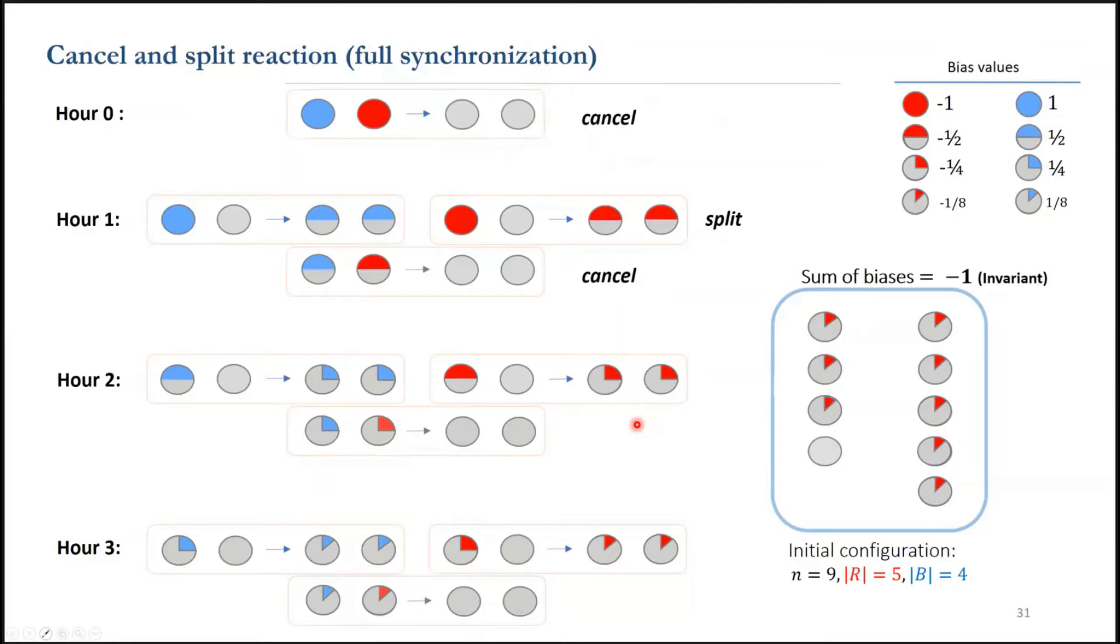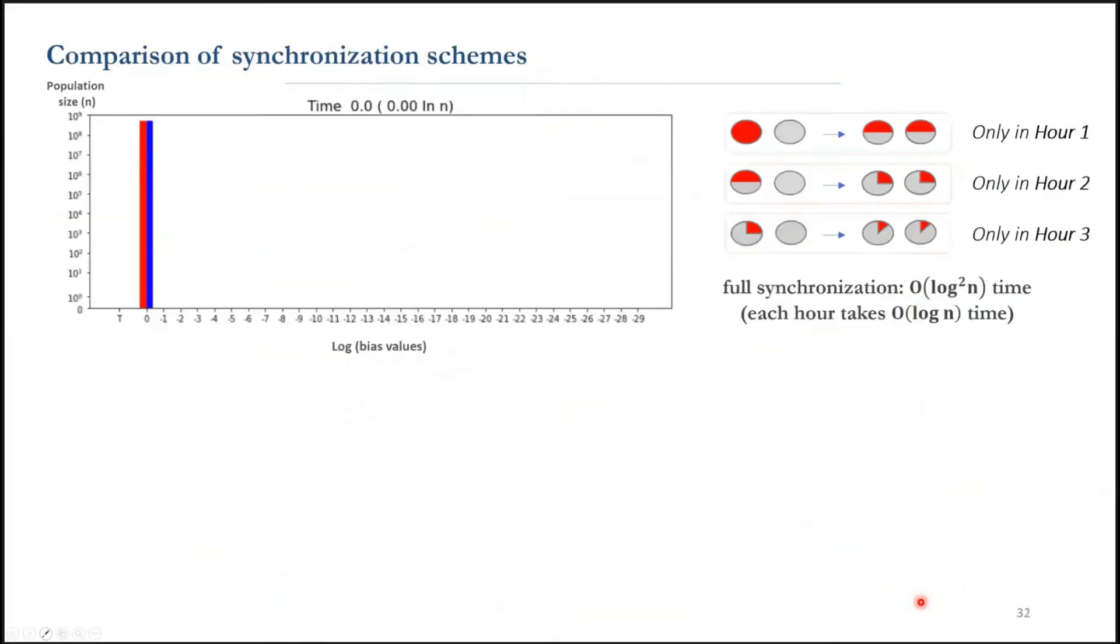So even if the agents start with a gap of 1, if the gap gets doubled at each hour, it will take about log n hours to make a linear gap.